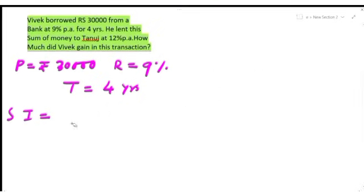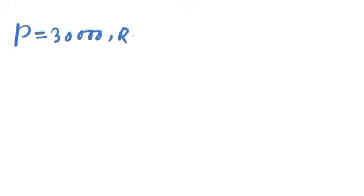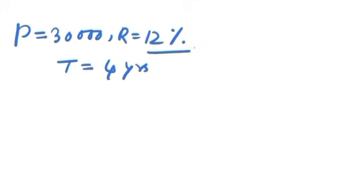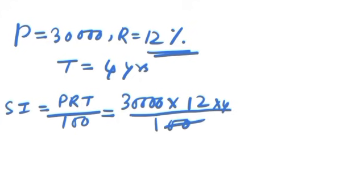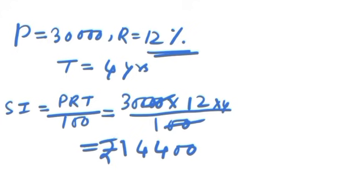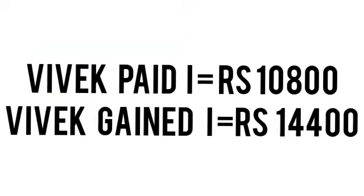In part two: P = 30,000 (same amount), T = 4 years (same), but R = 12 percent — this is different. Putting values into the formula: SI = PRT/100 = 30,000 × 12 × 4 ÷ 100. After cancelling and simplifying, simple interest in part two equals rupees 14,400.